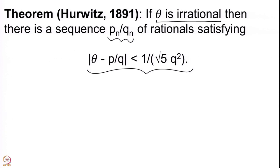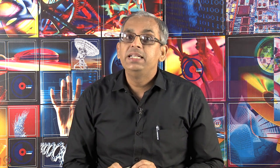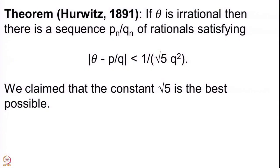We said that this constant √5 is the best possible constant — you cannot improve it. And we are going to prove this.